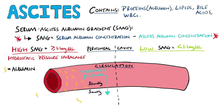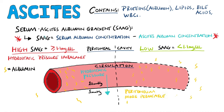If we see ascites that has a low serum ascites albumin gradient, we know that the concentrations of albumin in the ascitic fluid and in the serum are similar, which means that the peritoneum is more permeable than usual and is allowing albumin to pass through. This is an oncotic pressure imbalance.